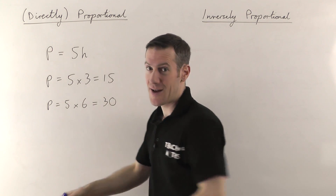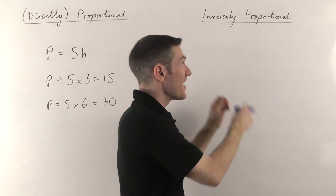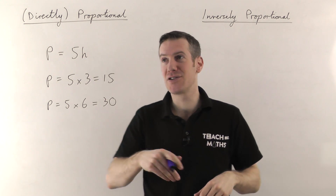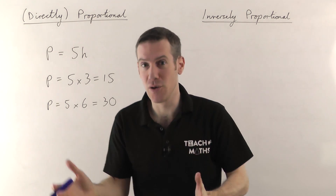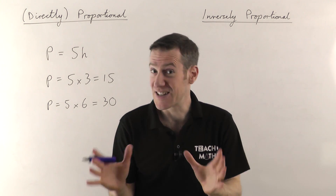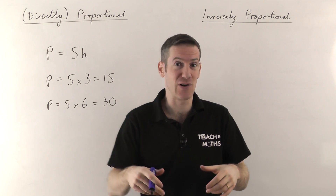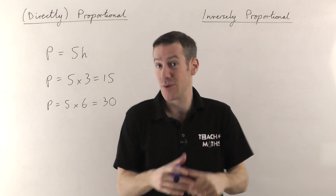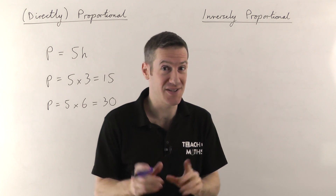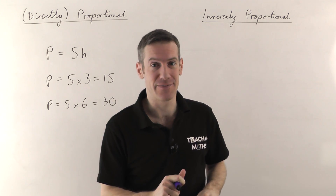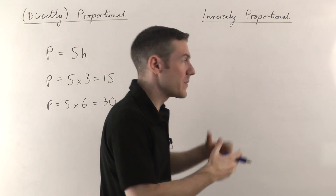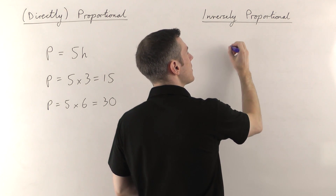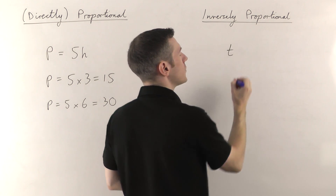Now contrast that with inversely proportional. Imagine you have to mow a lawn — a really big lawn, like the lawn of Buckingham Palace. It needs a few people to mow it; one person isn't enough. So we might have a relationship where the time it takes to mow the lawn, we'll call that t, is related to the number of people doing the job.